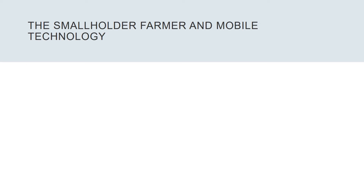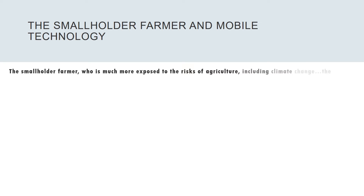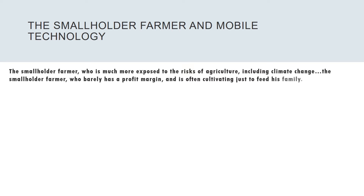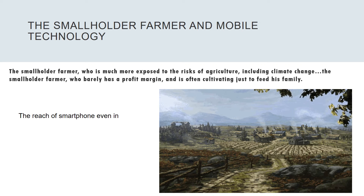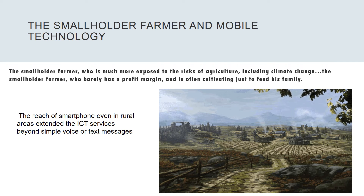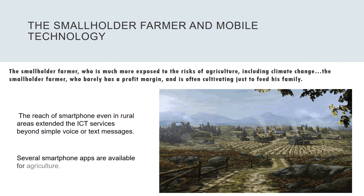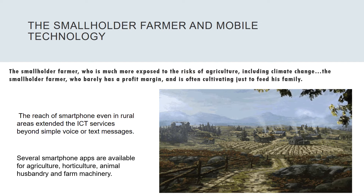Next, we have the smallholder farmer and mobile technology. The smallholder farmer is much more exposed to the risks of agriculture, including climate change, and barely has a profit margin — often cultivating just to feed his family. The reach of smartphones even in rural areas has extended ICT services beyond simple voice or text messages. Several smartphone apps are available for agriculture, horticulture, animal husbandry, and farm machinery.